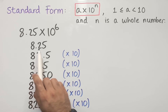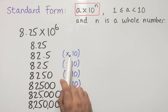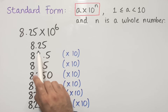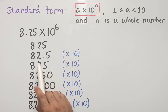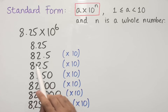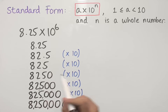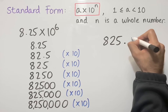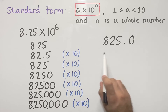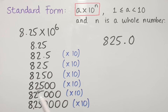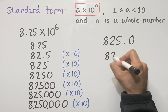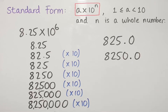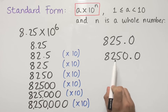Starting at 8.25, if we multiply by 10 we get 82.5 — the decimal point has moved one space to the right and is now between 2 and 5. If we multiply by another 10, the decimal point is essentially next to the 5, giving us 825, which is the same as 825.0. If we multiply this by 10 we get 8250, the decimal point moves one space to the right, and this is no different in value to 8250.